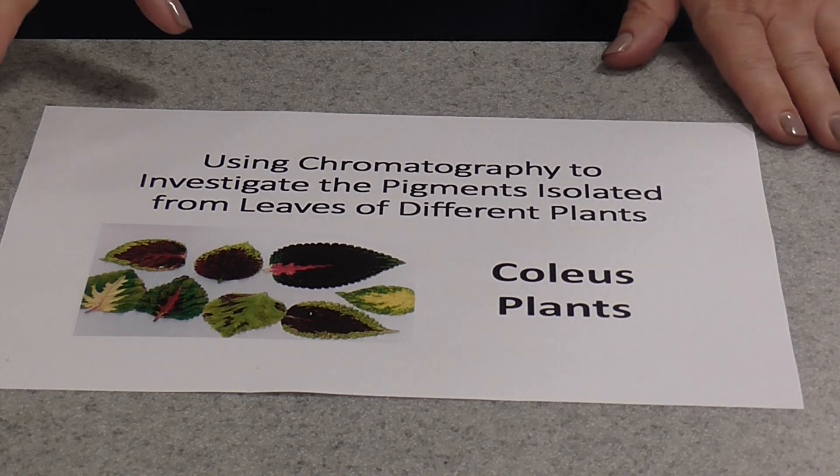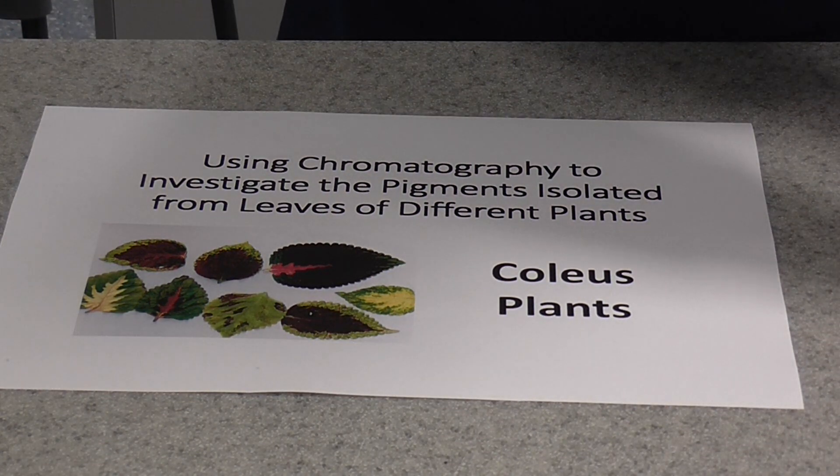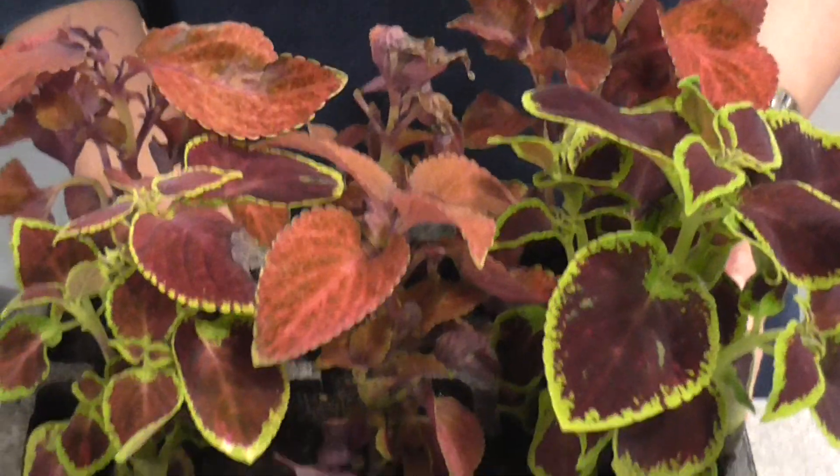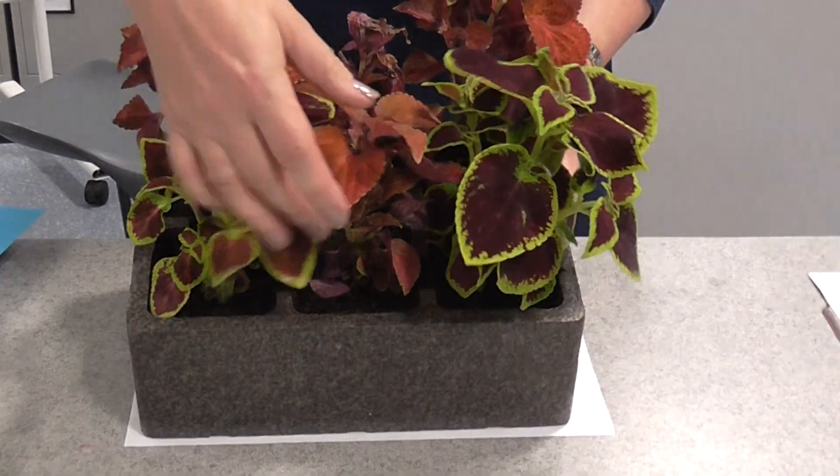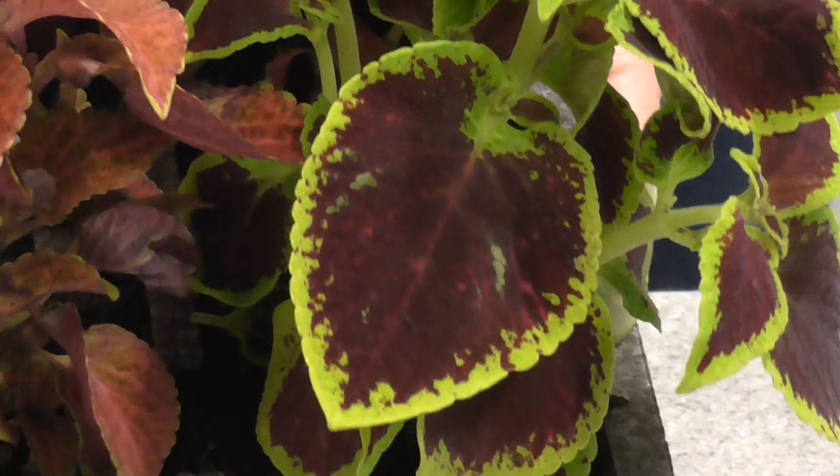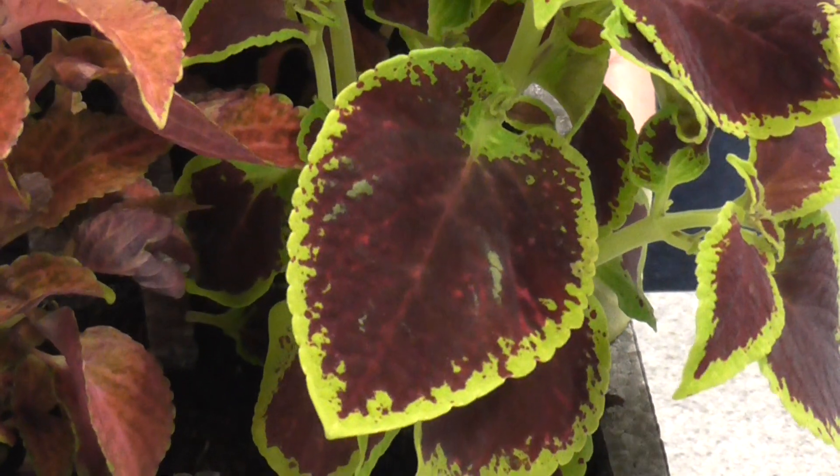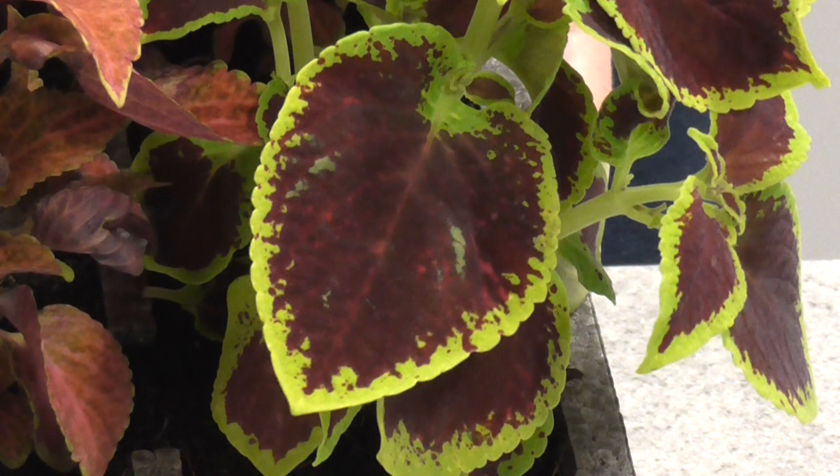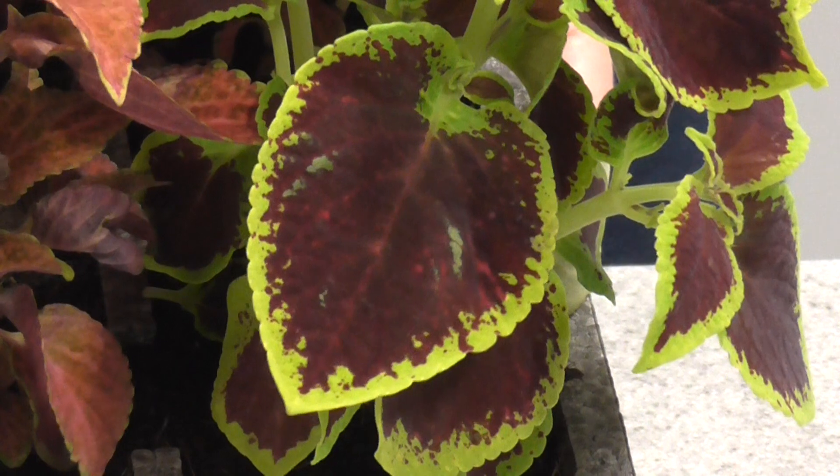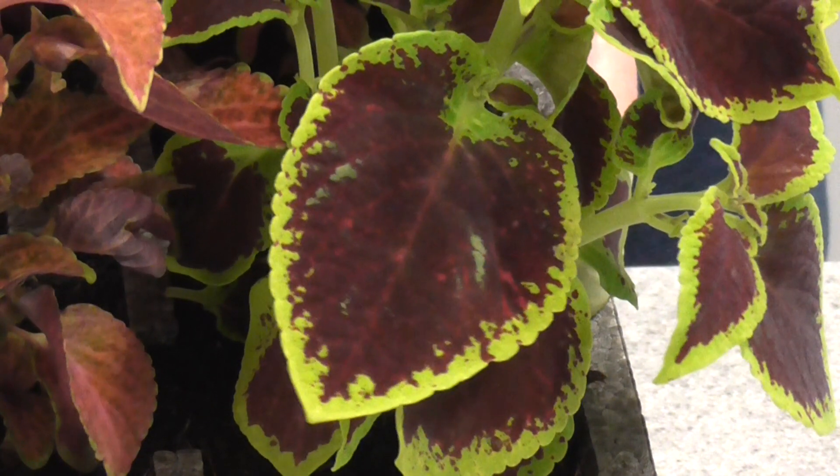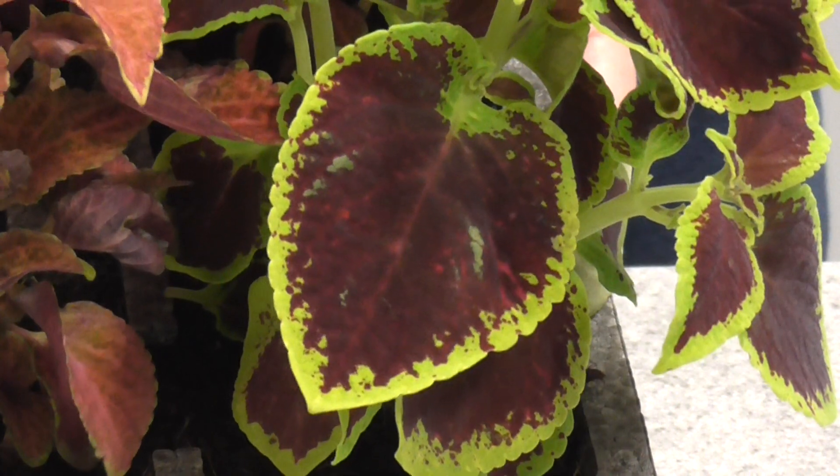Now, the absolute best plant to do this with, in my experience, are coleus plants. They've got these very colorful leaves that clearly have quite a variety of photosynthetic pigments. Remember, the pigments are just colored compounds. In plants, they play a really important part in the light-dependent reaction of photosynthesis because it's those different colored pigments that harvest the light energy.